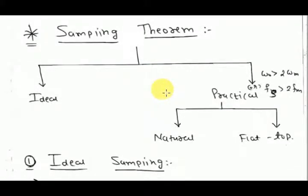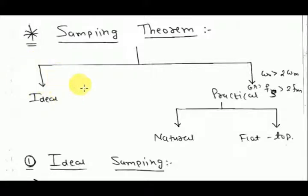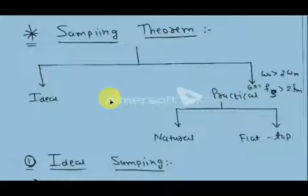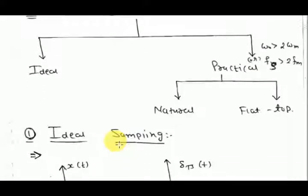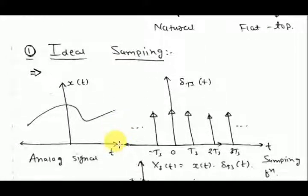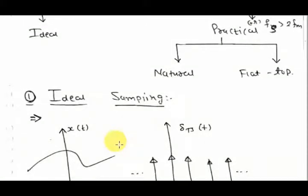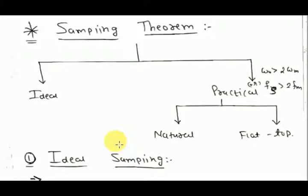The next important topic, especially for communication, is the sampling theorem. For digital communication, we need to convert our signal into digital form. First, convert the continuous signal into a discrete signal — that is, take samples of the continuous time signal. Sampling can be done by two methods: ideal sampling and practical sampling. Practical sampling is also of two types: natural and flat-top. An important result is the sampling theorem: the sampling frequency f_s should always be greater than or equal to 2 times the maximum signal frequency. This topic will be covered from the next lecture.